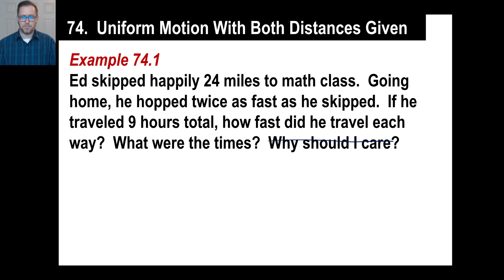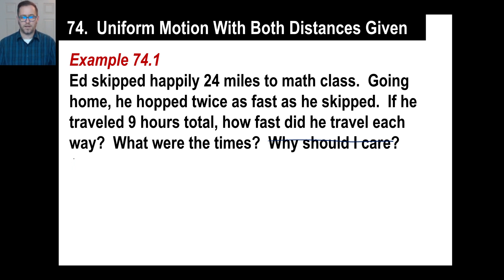Ed skipped happily 24 miles to math class. That's our first equation: the distance skipping was 24 miles. He goes the same distance both ways, so we have R sub S times T sub S equals 24. The distance hopping is also 24.